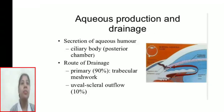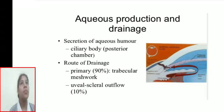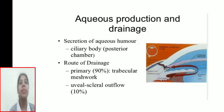Aqueous humor production and drainage. Secretion of aqueous humor begins in the ciliary body, then moves to the posterior chamber. The primary drainage route — about 90% — occurs through the trabecular meshwork, with the remaining flow via uveal-scleral outflow.